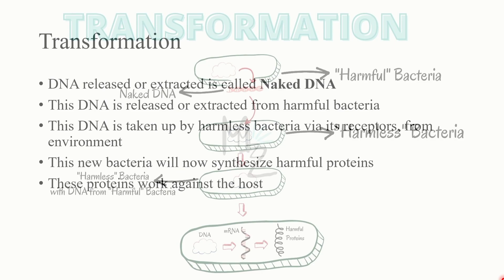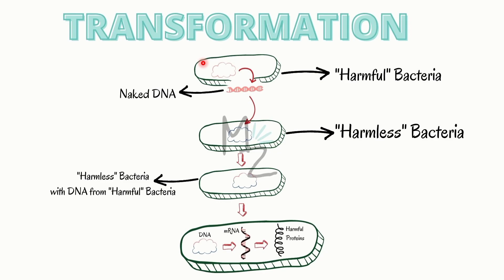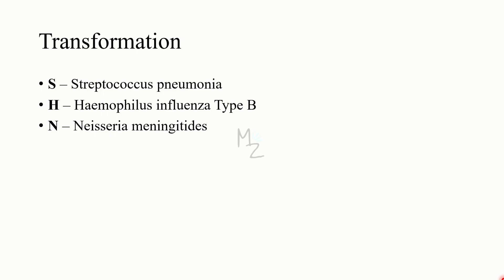The harmful bacteria's naked DNA is taken up by harmless bacteria via surface receptors. This new bacterium now has a mixture of DNA — harmless and harmful. The harmful genes are translated into mRNA, forming harmful proteins that work against the host in which this bacterium causes infection. This is how transformation works. The bacteria responsible for transformation are SHN: S for Streptococcus pneumoniae, H for Haemophilus influenzae type B, and N for Neisseria meningitidis.